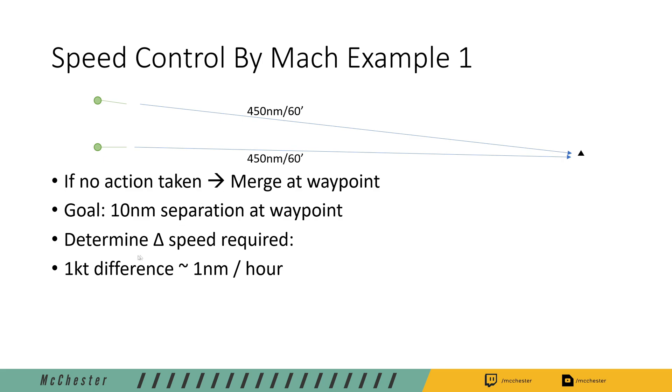So one knot difference in speed equals one nautical mile of separation per hour, and since those two aircraft are flying one hour that's rather easy to calculate. We have one hour time for 10 nautical miles, so for 10 nautical miles we need 10 knots of difference. That's the delta speed that we require.